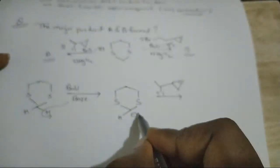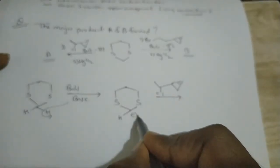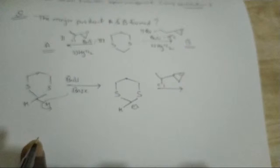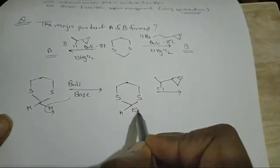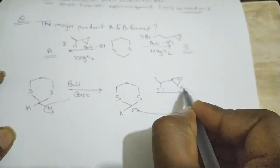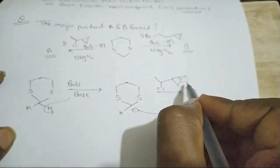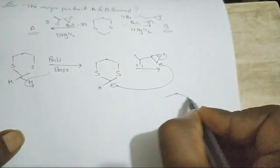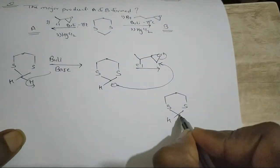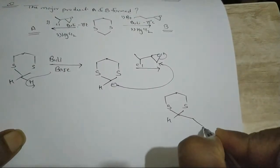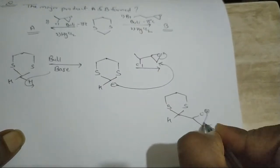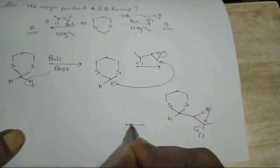This base abstracts from the less hindered side. The negative charge attacks from the other side — this bond shifts — and we get an oxygen with a negative charge. Now this oxygen negative charge attacks, the Cl leaves.